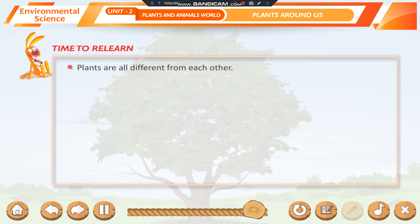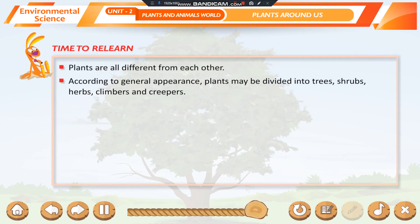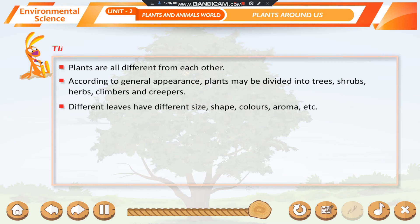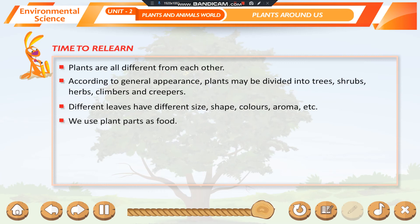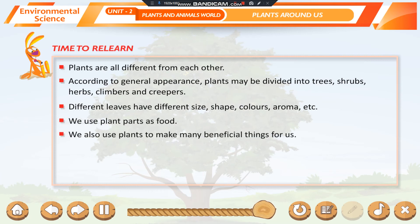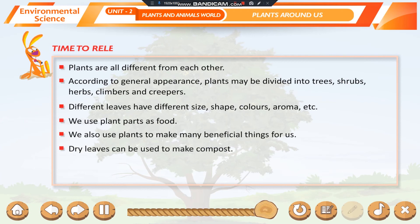Time to relearn. Plants are all different from each other. According to general appearance, plants may be divided into trees, shrubs, herbs, climbers, and creepers. Different leaves have different size, shape, colors, aroma, etc. We use plant parts as food. We also use plants to make many beneficial things for us. Dry leaves can be used to make compost.